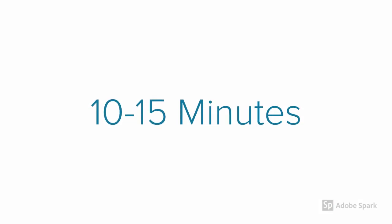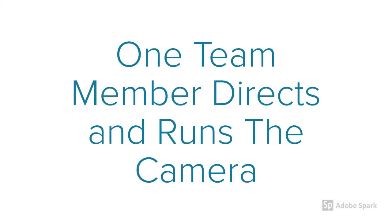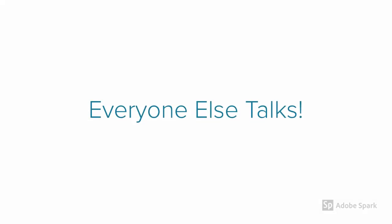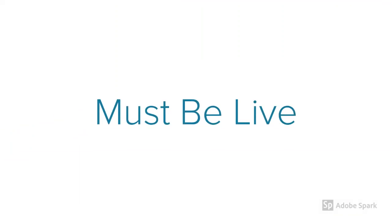Next up is the discussion group. It probably sounds like the easiest option, but that's why it's also the longest — it needs to be between ten and fifteen minutes long. It's a little different from the lit cast in that one team member won't appear in the final product; someone has to direct and run the camera. Everyone else has to appear in the discussion group video. To make things a bit more complicated, you have to shoot it live — there's no editing. So if you make a mistake, you either have to start over or we're all going to see it.